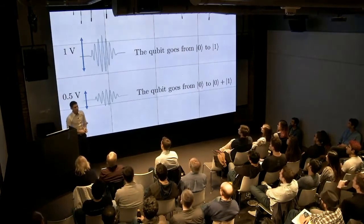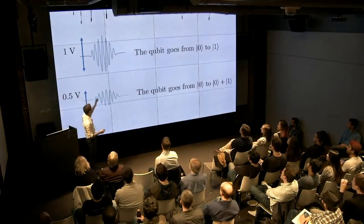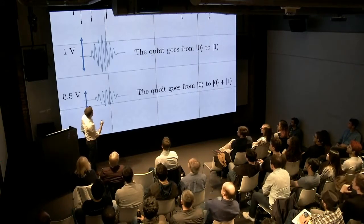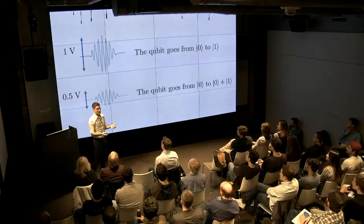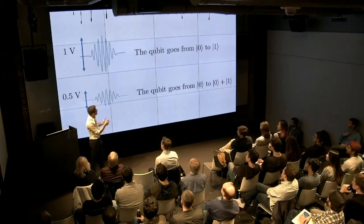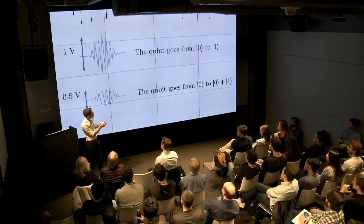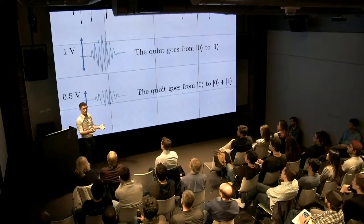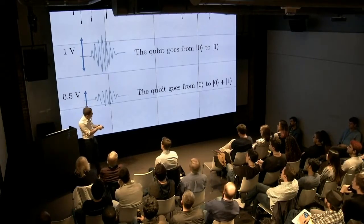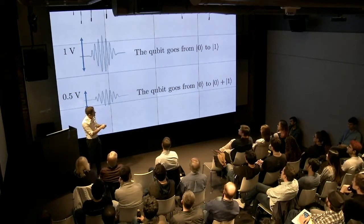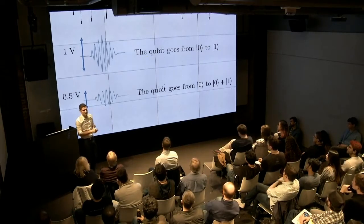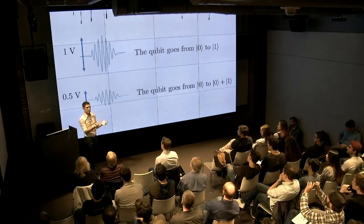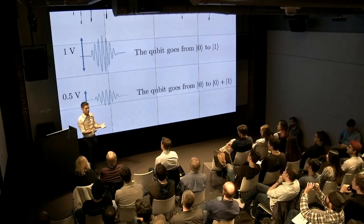The electrical pulses I send to the qubit look like this. These are one-volt electrical pulses. If you send a pulse with an amplitude of one volt, the qubit goes from zero to one. If the applied pulse is just 0.5 volts, the qubit goes from the ground state to the superposition state. This is how we create superposition states in our superconducting qubits.